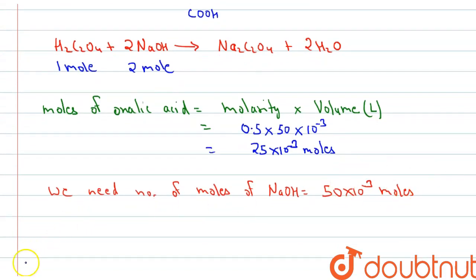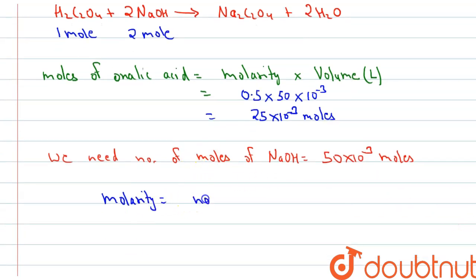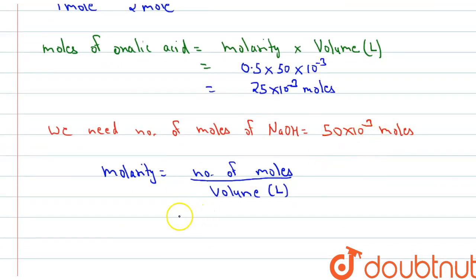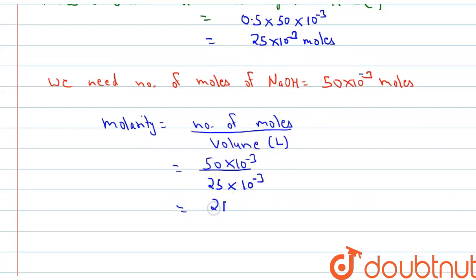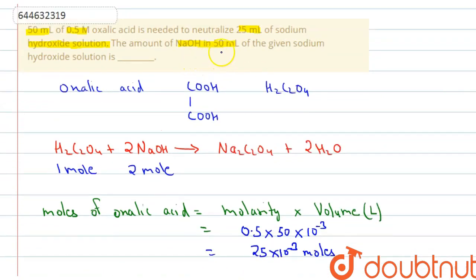Now we find the molarity of NaOH. Using the formula molarity = number of moles / volume, we have 50 × 10⁻³ moles divided by 25 ml, which is 25 × 10⁻³ liters. So the molarity of NaOH is 2 M.